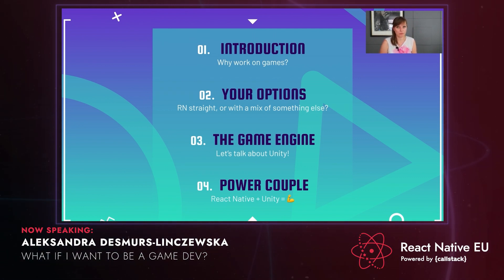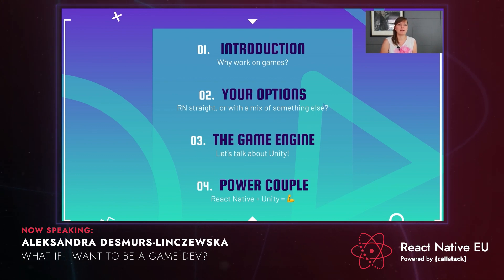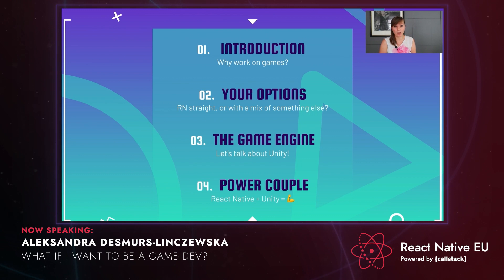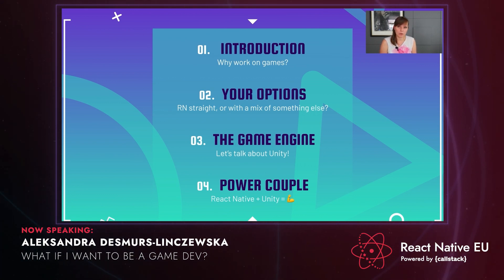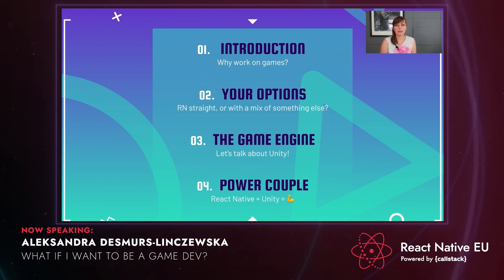My talk will be divided into four parts. First, I'll do an introduction about a little bit about myself and the reasons for making this talk. I will then go on to presenting your options — what can you do if you want to develop games? Then I will concentrate on a game engine called Unity. And lastly, I will talk about integrating Unity with a React Native app.